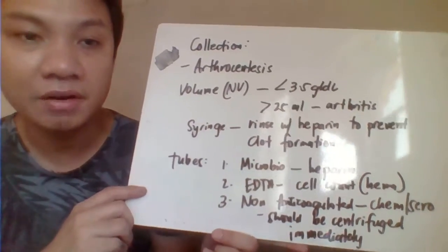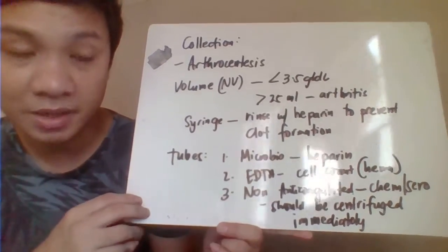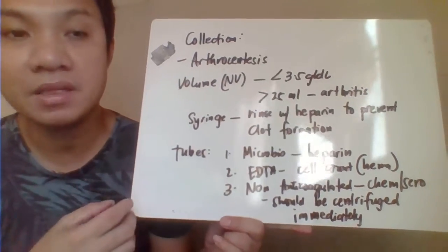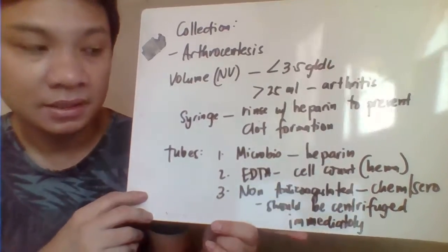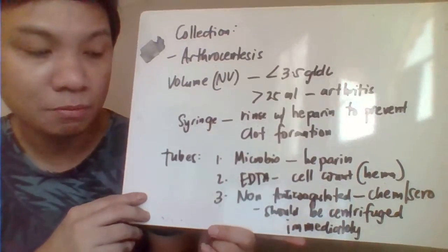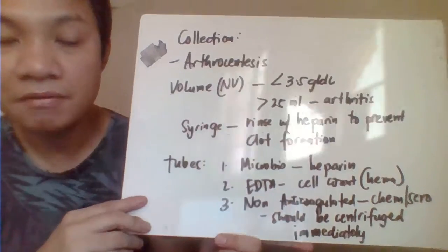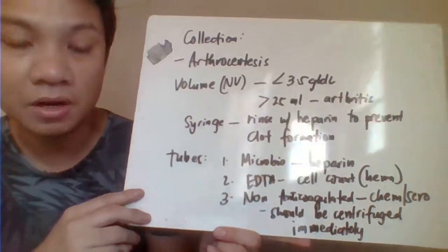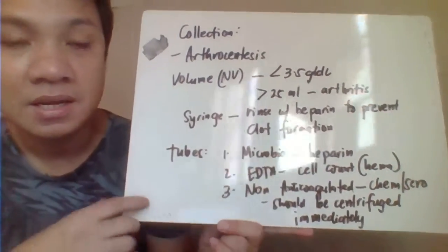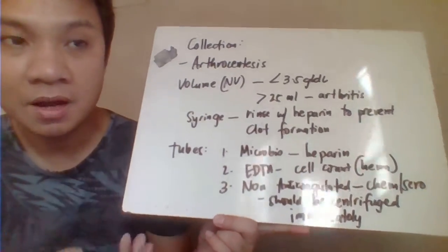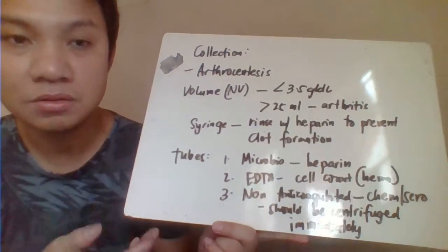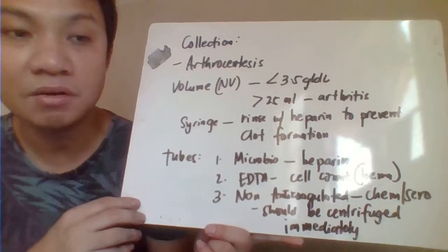For the collection process with corresponding anticoagulants: for microbiology, Gram stain, and culture and sensitivity, the specimen is collected in heparin. For hematology cell count, you need to put it in EDTA anticoagulant. For chemistry and serology, it should be non-anticoagulated. For these tests, you need to centrifuge the specimen immediately and separate the sediments to prevent distortion or interaction of chemicals present in the synovial fluid.